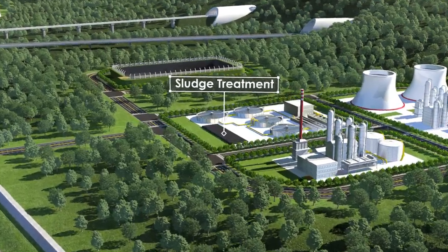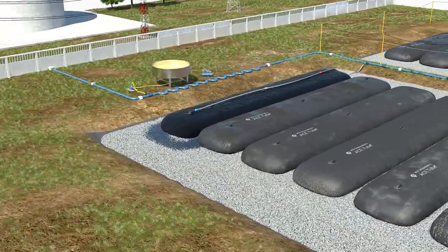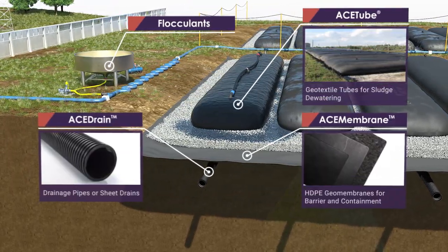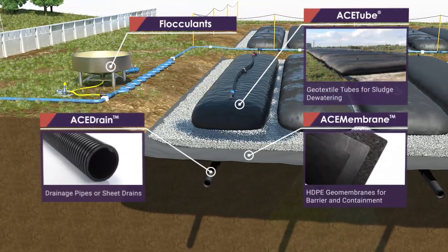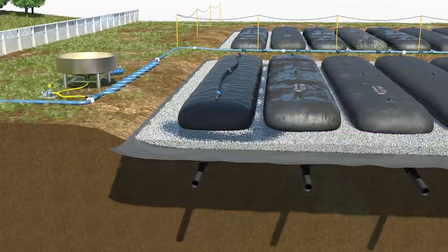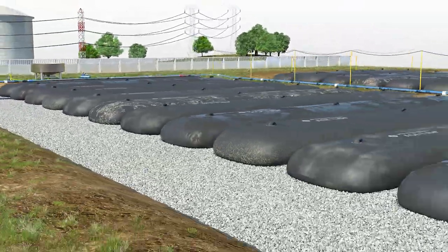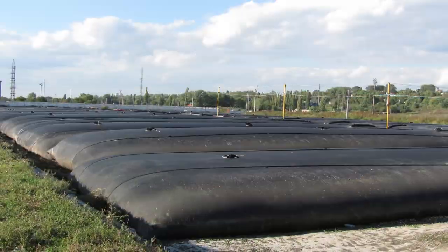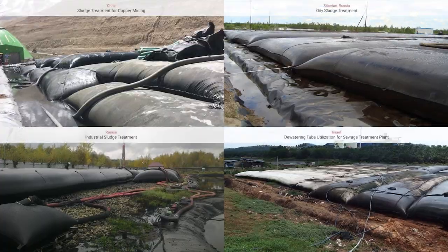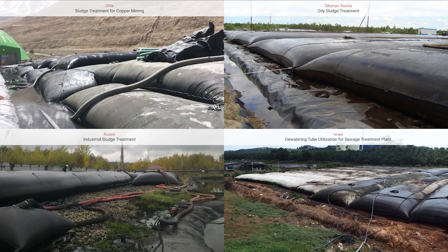Sludge Treatment: Filling sludge into ACE-TEX geotextile tube and then adding flocculants or other chemical additives will promote solid-liquid separation, leaving the waste solid in the bag, effectively decreasing treatment time and transportation cost. The high sludge treatment capacity with low space requirement of this system has been recognized gradually by the market in this field.